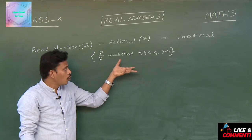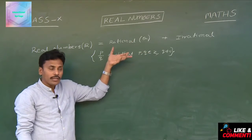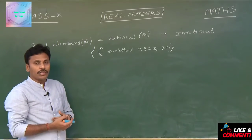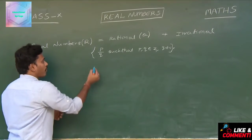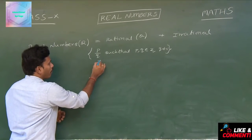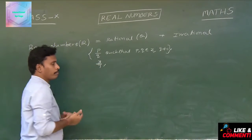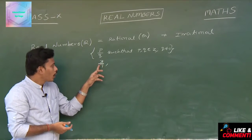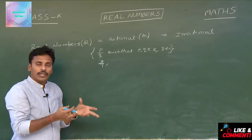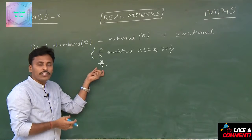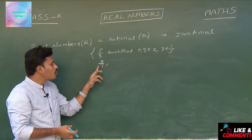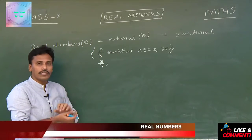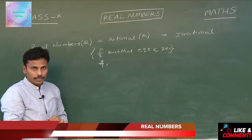These rationals are denoted by the letter Q. Let us go with a few examples. If we have 3 by 7, then P is 3 and Q is 7 — both are integers and the denominator is non-zero. So it is of the form P by Q and we call 3 by 7 a rational number.